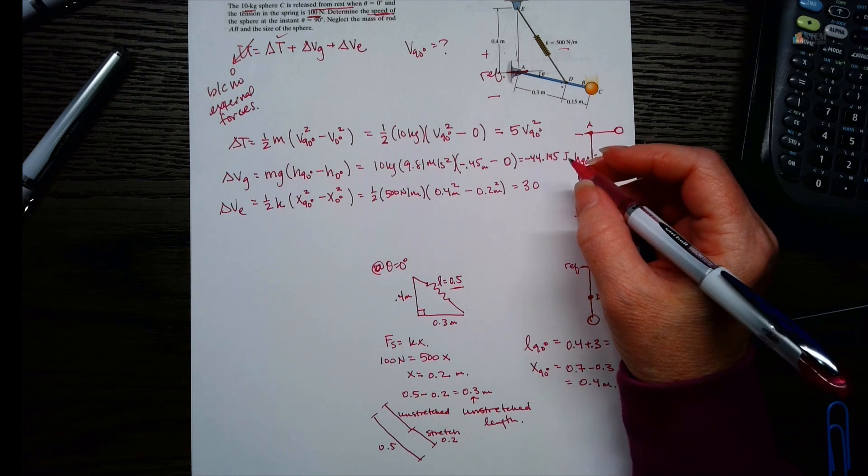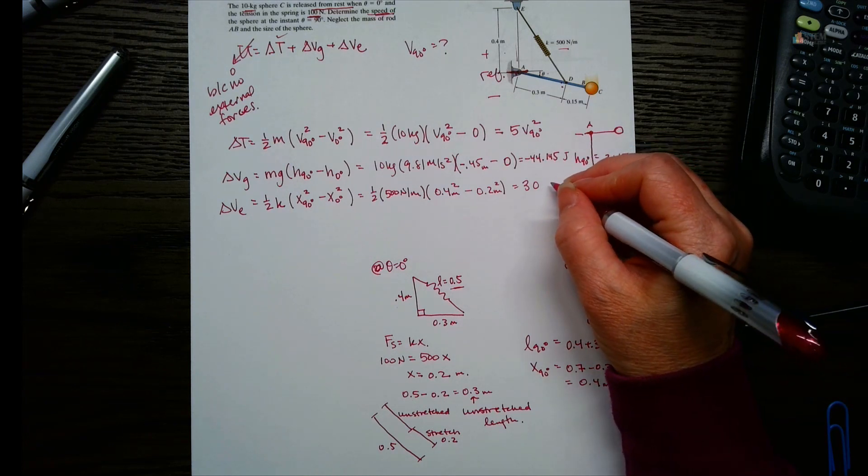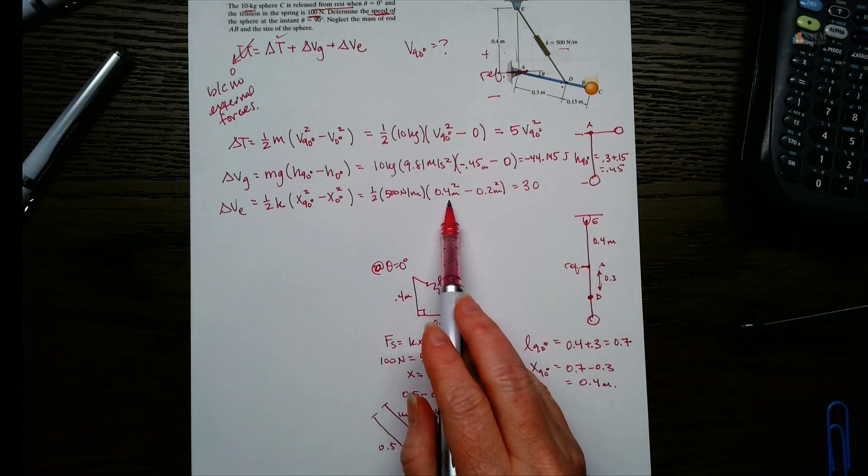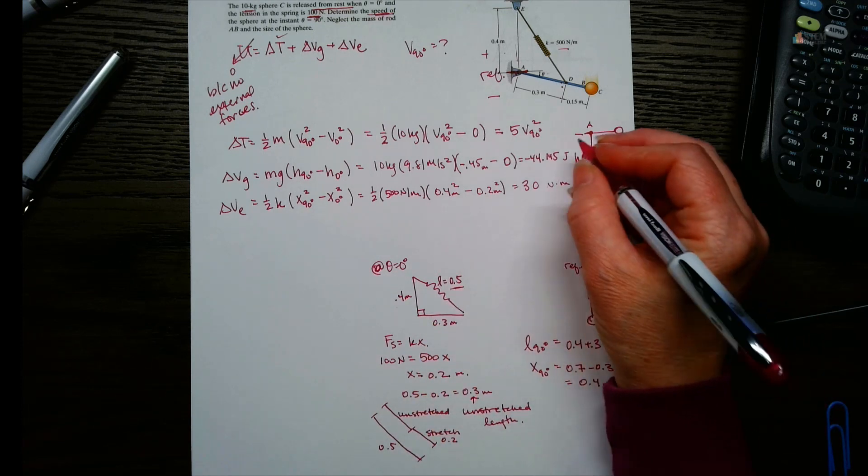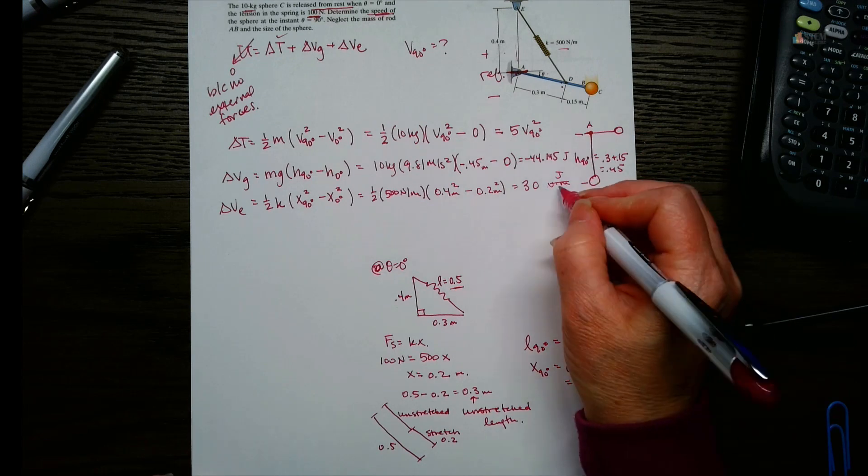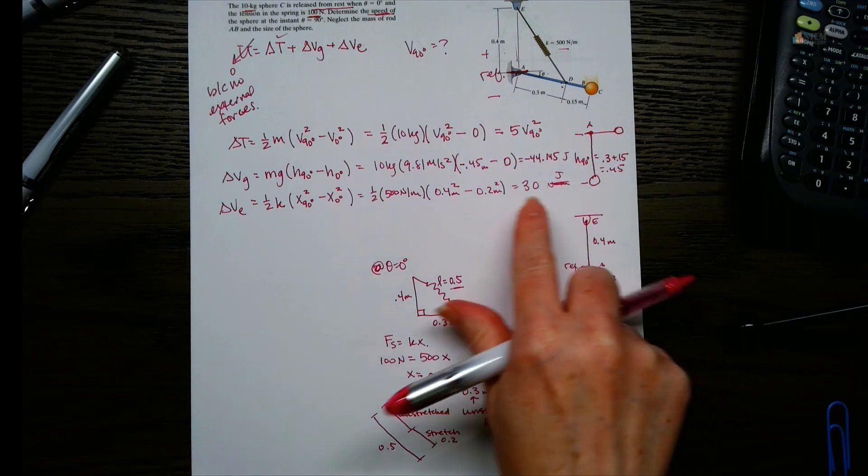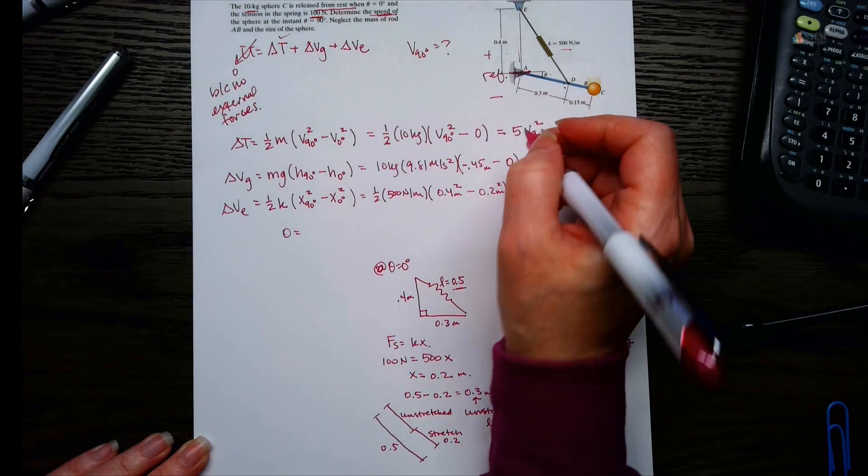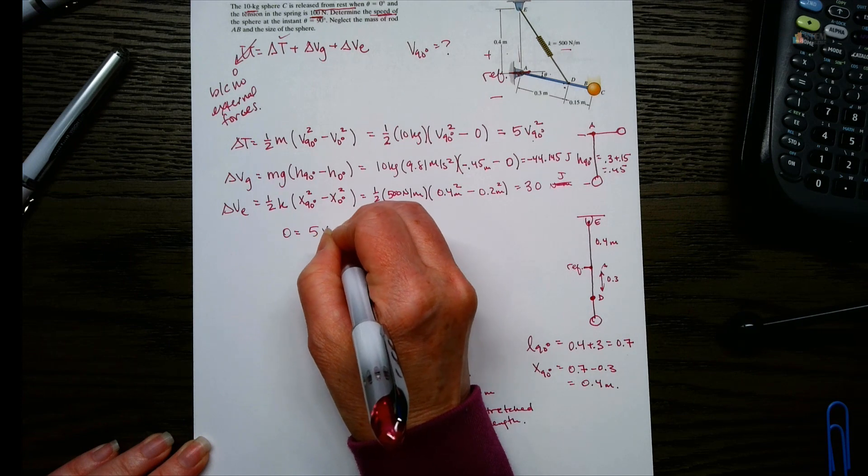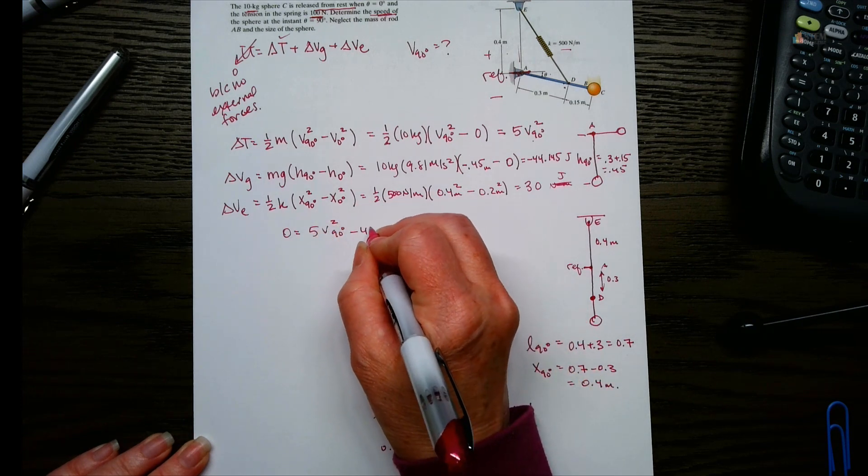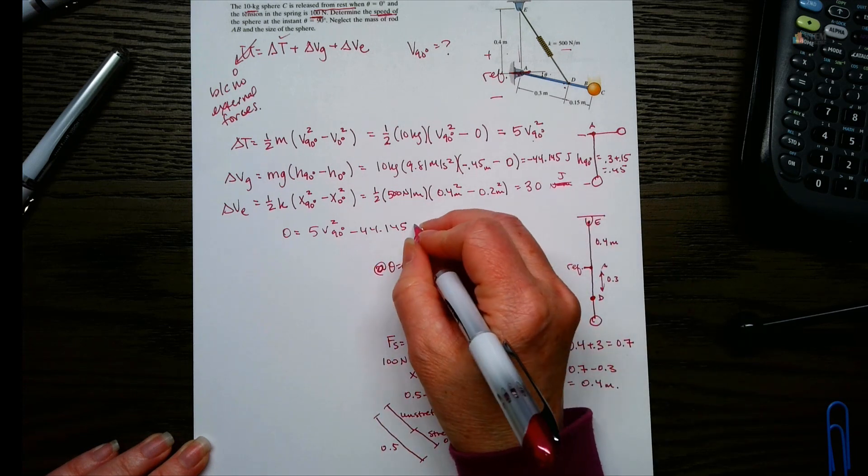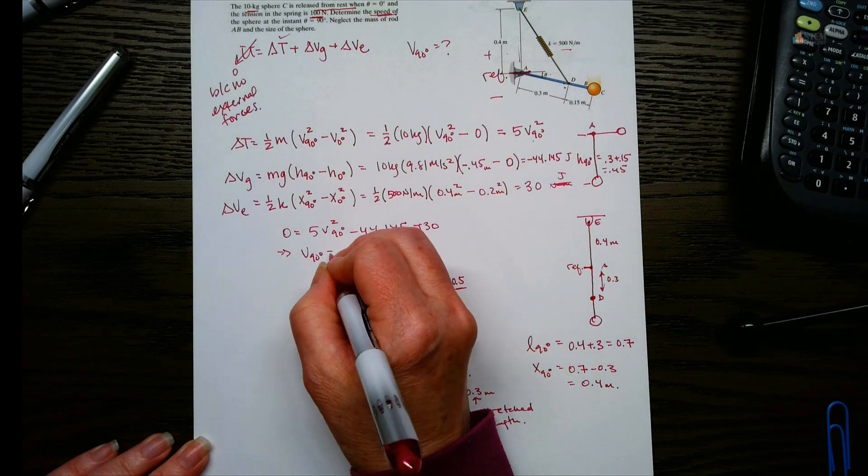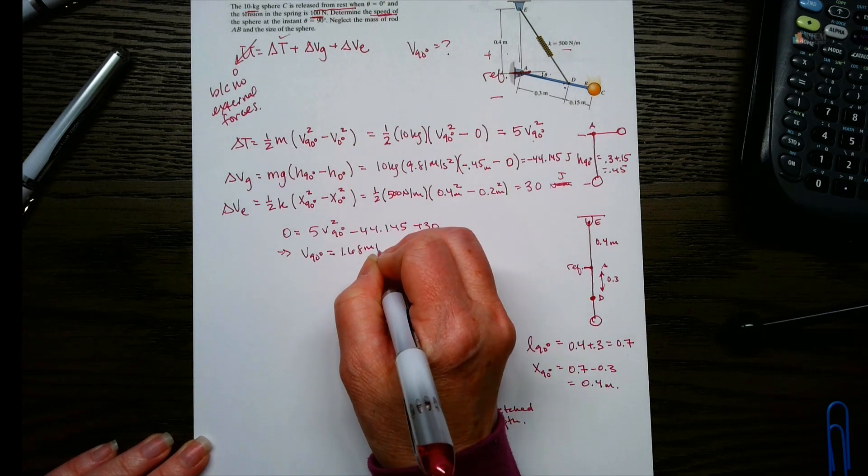So now we've got this. We know the left side is 0. So let's say 0 equals 5V90 squared minus 44.145 plus 30. So now you can find your velocity when you're at 90 degrees, and you end up getting 1.68 meters per second.